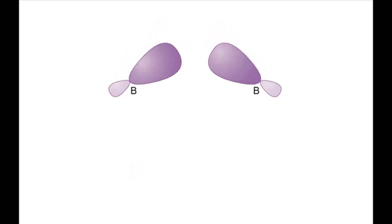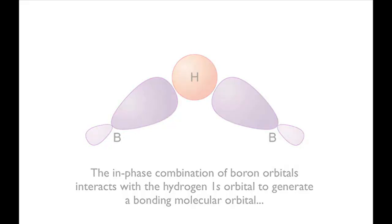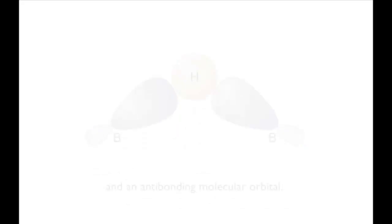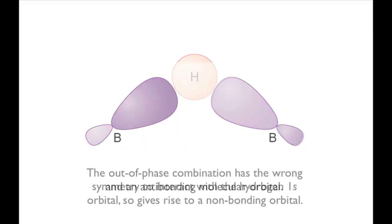The hydrogen 1s orbital interacts with the in-phase combination of boron orbitals to give a bonding orbital and an anti-bonding orbital. However, the 1s orbital cannot interact with the out-of-phase combination of boron orbitals, since it doesn't have the right symmetry.